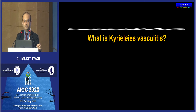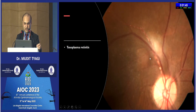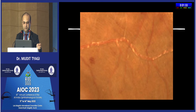Another important sign is Kyrieleis vasculitis, classically described in association with toxoplasmosis. It is an intravascular accumulation of plaques on the endothelium of vessels adjacent to a retinitis lesion. While it can be seen in some other uveitic entities, it is very classically and commonly associated with toxoplasmosis. When you see these plaques adjacent to a retinitis lesion, your diagnosis of toxoplasma becomes clearer.